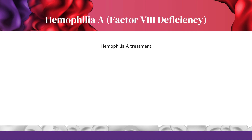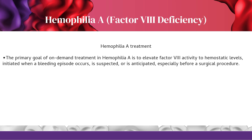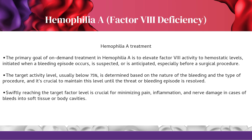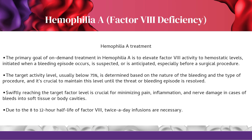Hemophilia A treatment — on-demand and prophylactic strategies: The primary goal of on-demand treatment is to elevate factor 8 activity to hemostatic levels, initiated when a bleeding episode occurs, is suspected, or is anticipated before a surgical procedure. The target activity level, usually below 75%, is determined based on the nature of the bleeding and the type of procedure. Due to the 8–12 hour half-life of factor 8, twice-a-day infusions are necessary.